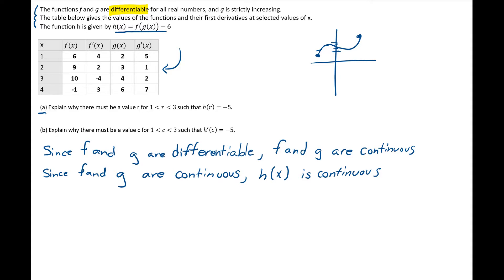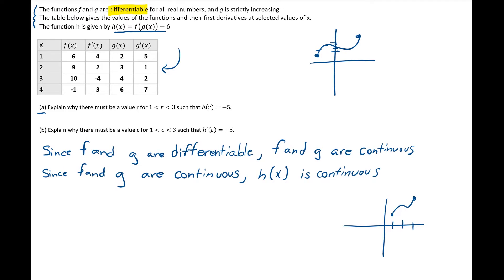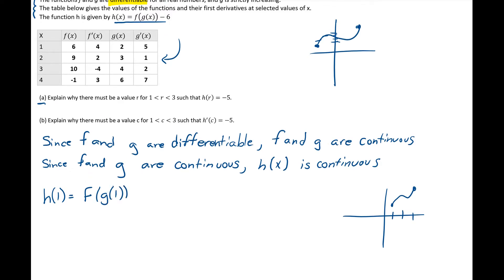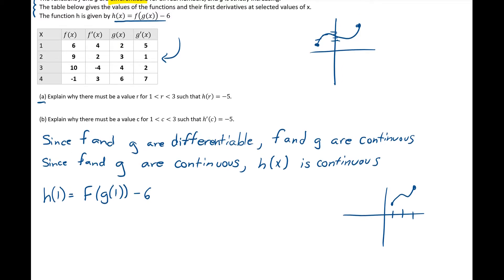We have established that h is continuous, so we can apply the Intermediate Value Theorem. We find the y-values at our endpoints. At x = 1: h of 1 equals f of g of 1 minus 6. From the table, g of 1 is 2, so we find f of 2 minus 6. f of 2 is 9, and 9 minus 6 is 3. So h of 1 equals 3.